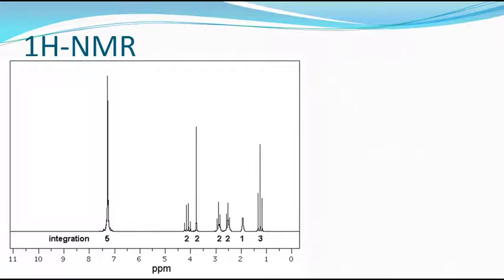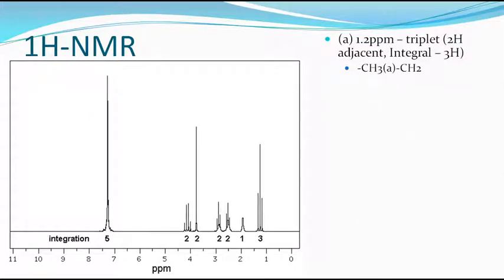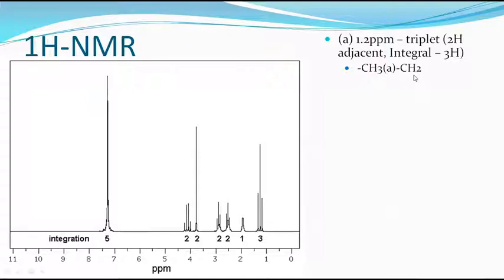Coming into proton NMR, here is where we have to find the structure of the compound. You can see several peaks — around seven peaks are there. The first peak at 1.2 PPM is a triplet. Since it is a triplet, two hydrogens must be adjacent. The integral value says it is three hydrogens, so it must be a CH3 group split by a neighboring CH2.